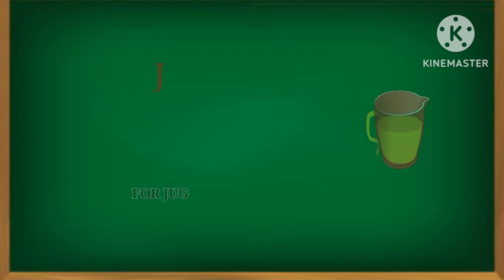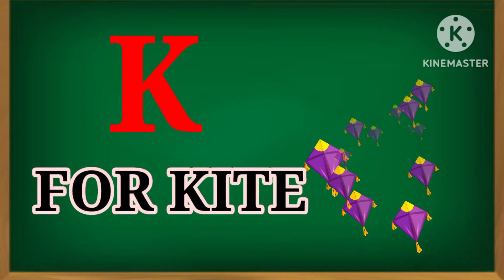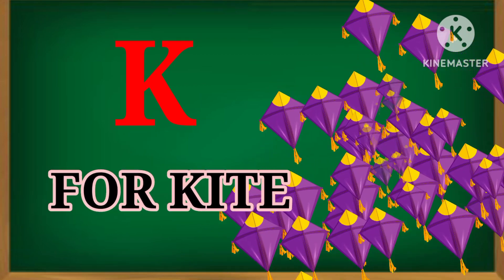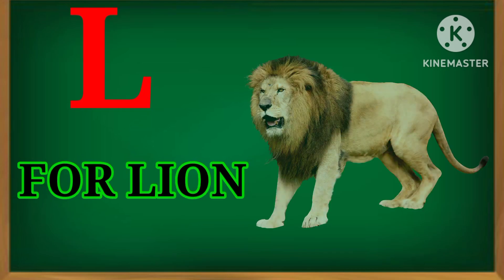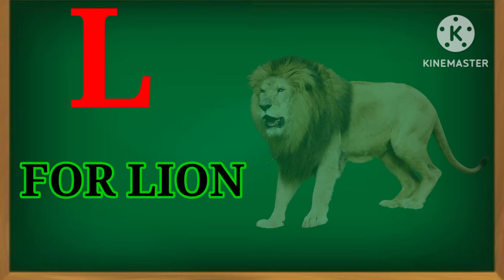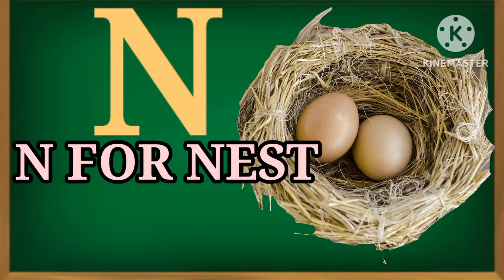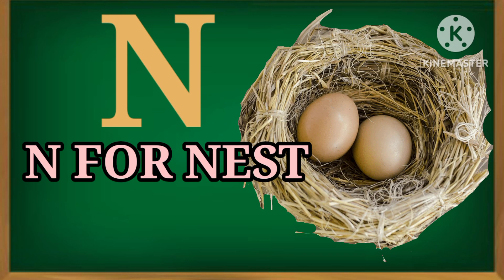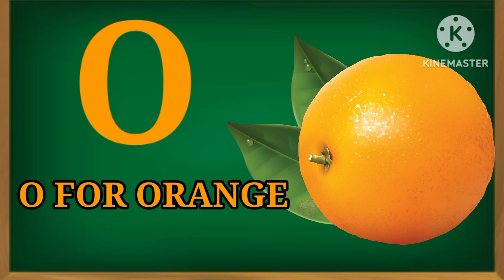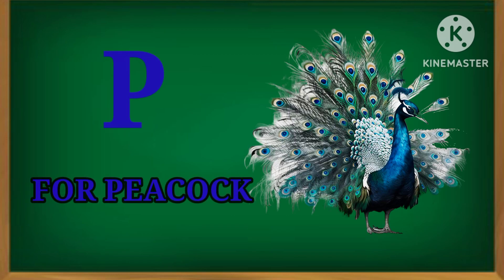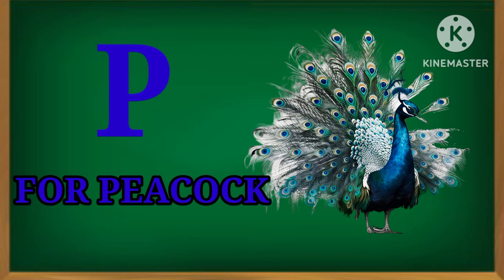I for ice cream, J for jack, K for kite, L for lamb, M for monkey, N for nest, O for orange, P for peacock.